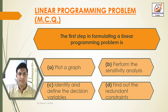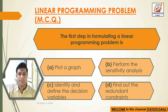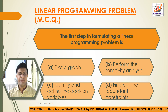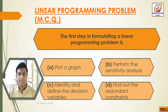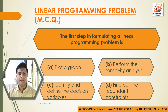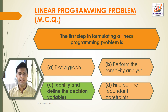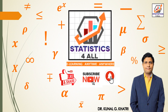Question 15: The first step in formulating a linear programming problem is — Option A: Plot a graph. Option B: Perform the sensitivity analysis. Option C: Identify and define the decision variables. Option D: Find out the region. Answer: Option C — The first step in formulating a linear programming problem is to identify and define the decision variables.